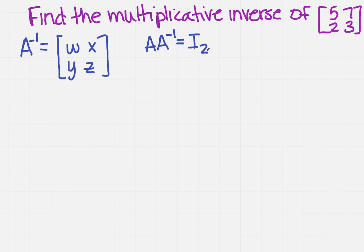So we need to do that to find W, X, Y, and Z. So that says I need to multiply them together. So I'm going to have my original, which is the 5, and a 2, and a 7, and a 3. And I'm going to multiply that by W, X, Y, and Z.